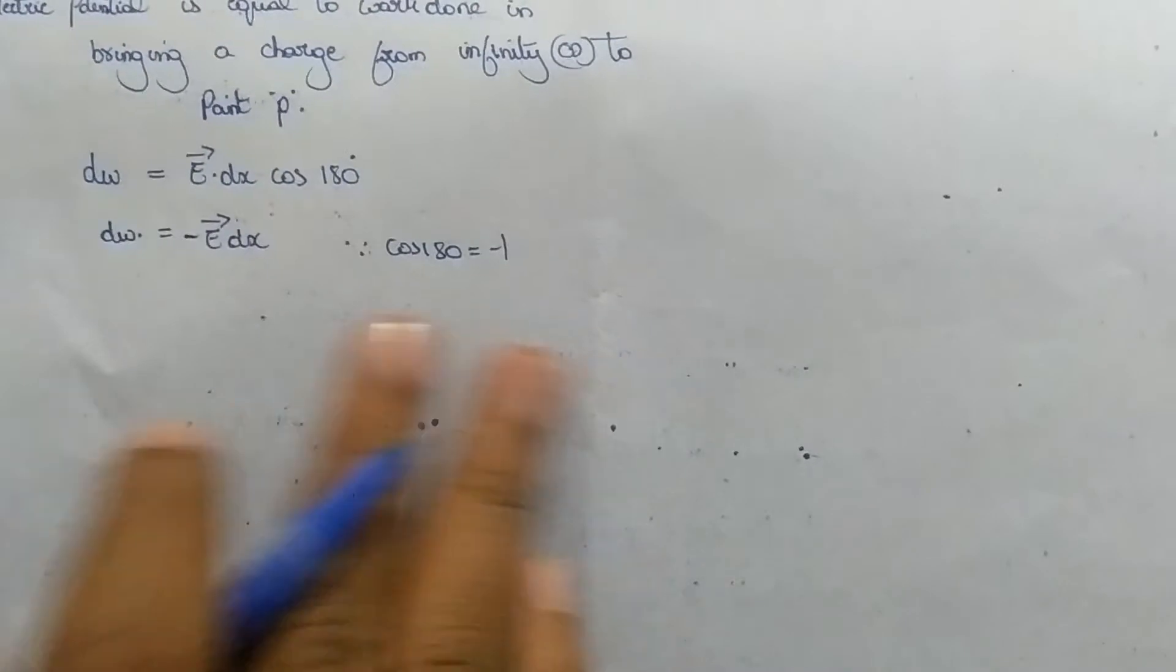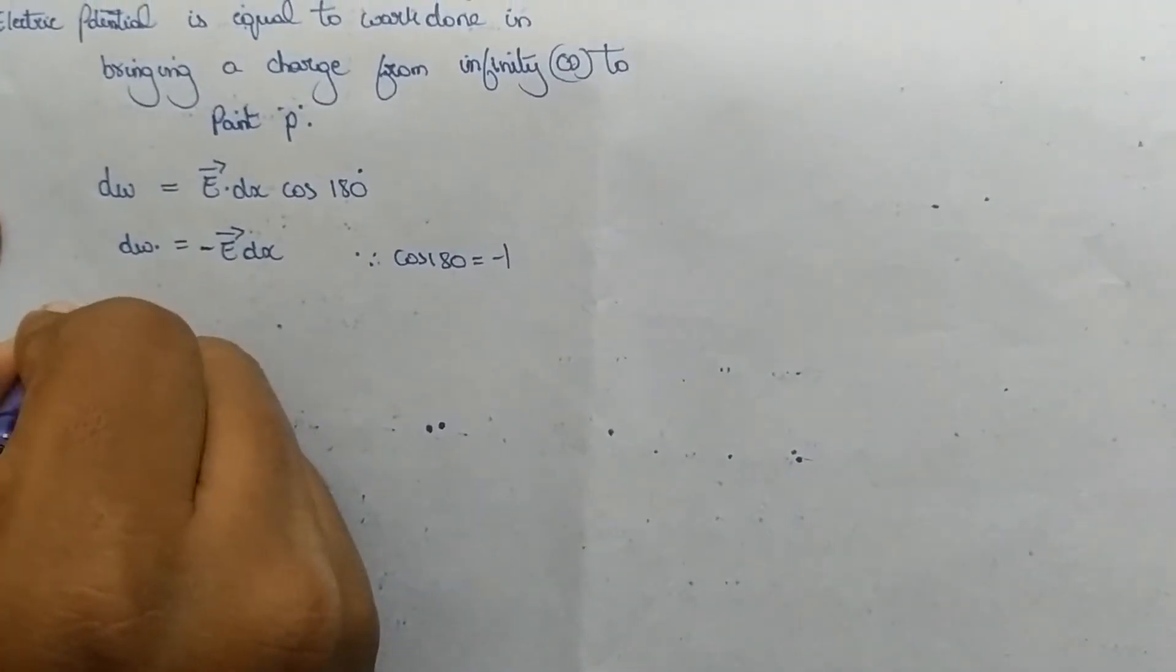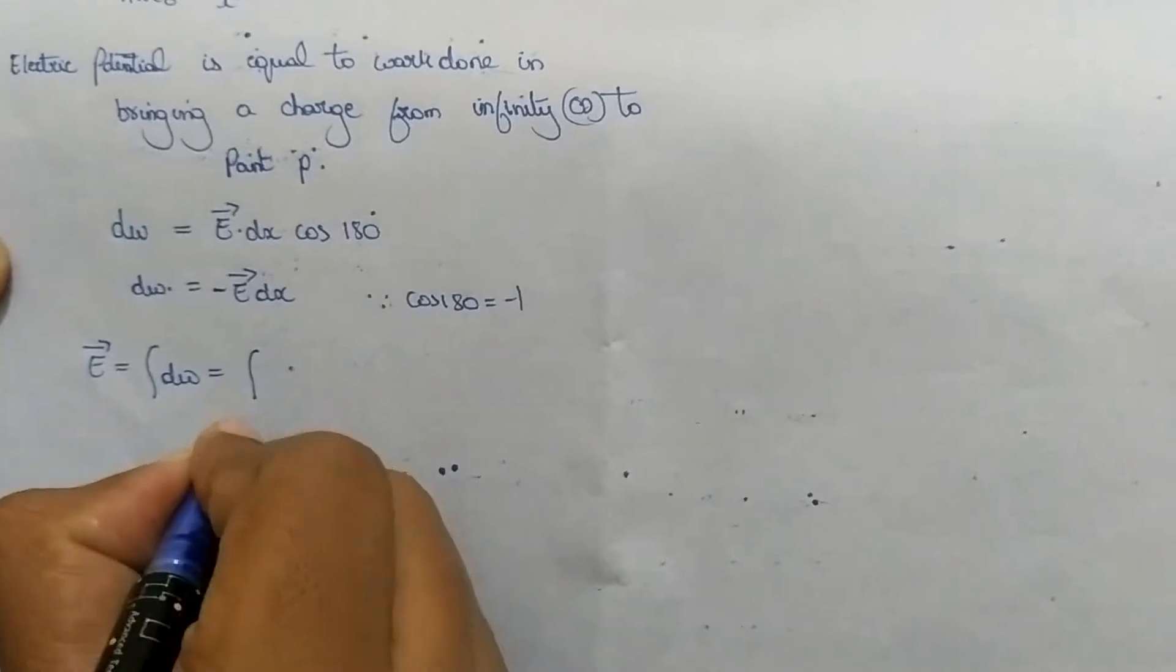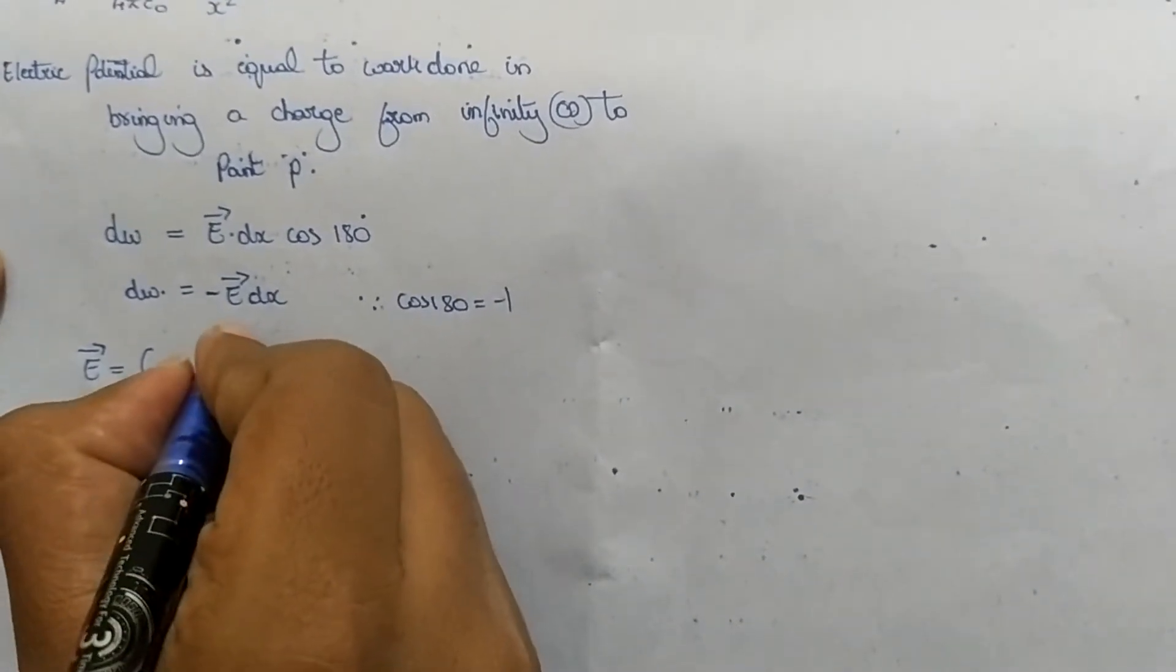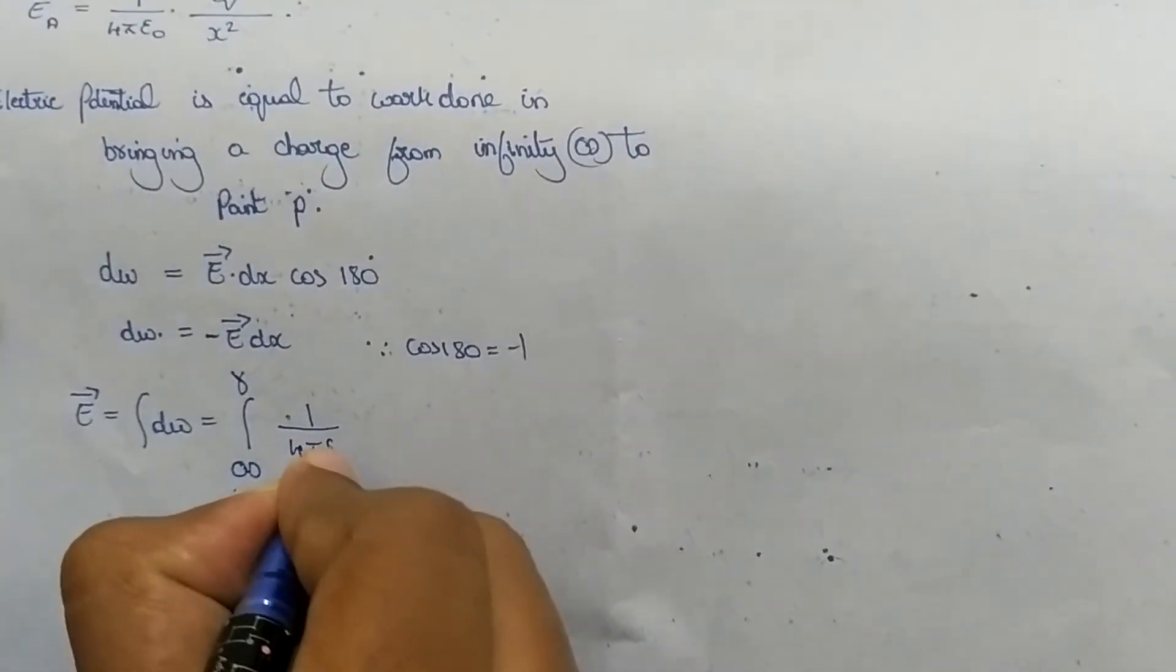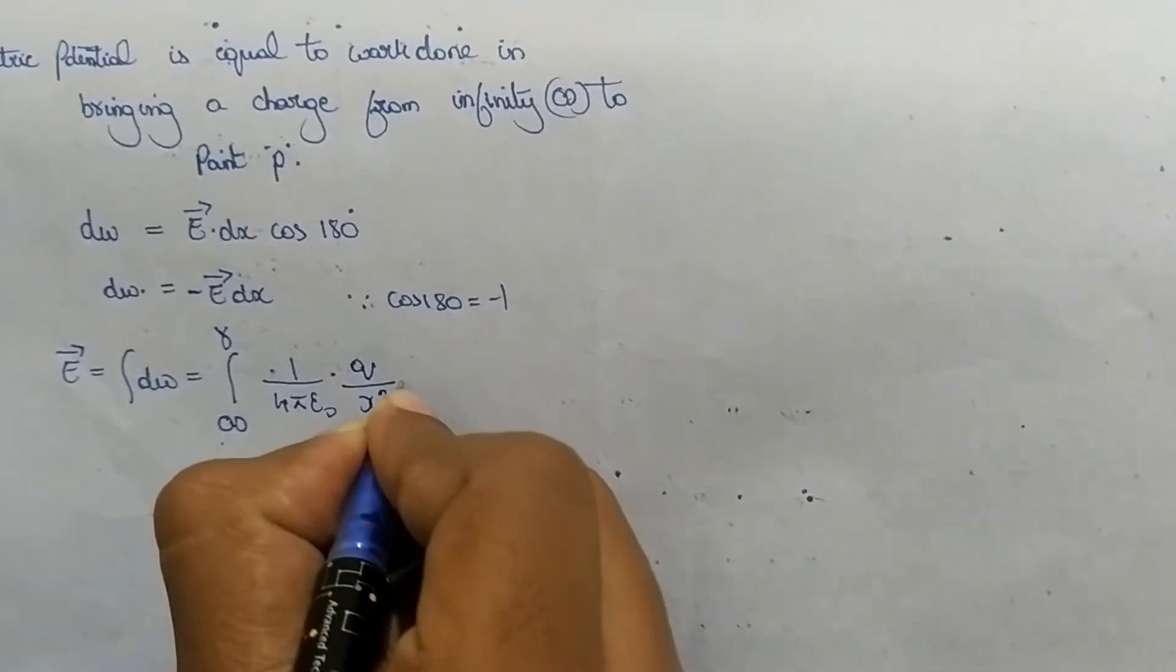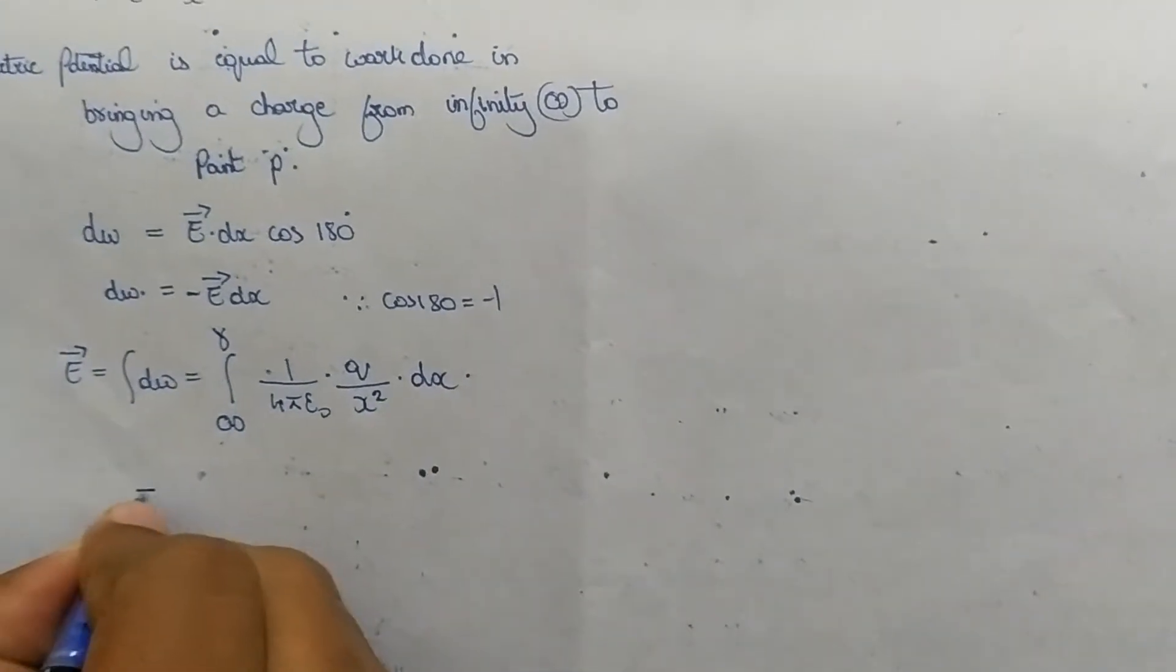Now for the whole path we must integrate this equation to get the work done for the whole path. On integrating, integration W equals integration from infinity to r, 1 by 4πε₀. On substituting the value of E we get 1 by 4πε₀ Q by x² into dx.